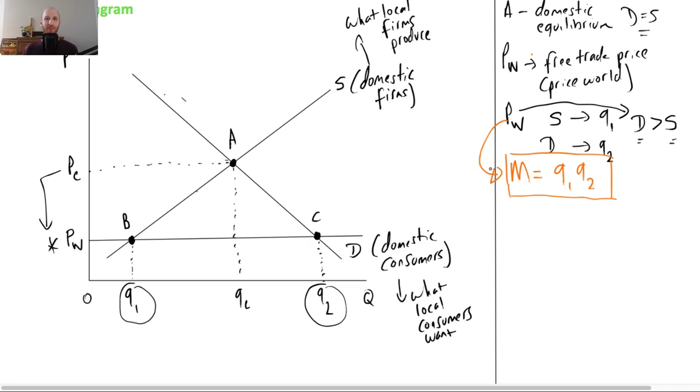But what happens in this situation is the government turns around and says, what we really want is we want more people to buy domestic goods because we want to support domestic employment. So we're going to put a tax on imports. We're going to put a tariff on, and this is what that will look like.